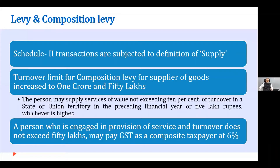Schedule 2 lists certain transactions as either goods or services. For example, works contract — in the earlier regime, it was a combination of goods and services, with the goods portion taxed by the state and the service portion taxed by the service tax department. Now, the entire activity is subjected to taxability as a service. There was a confusion about whether Schedule 2 transactions could be taxed without satisfying the general definition of supply, and they have amended the definition to say Schedule 2 transactions must also satisfy the definition of supply — a welcome amendment.